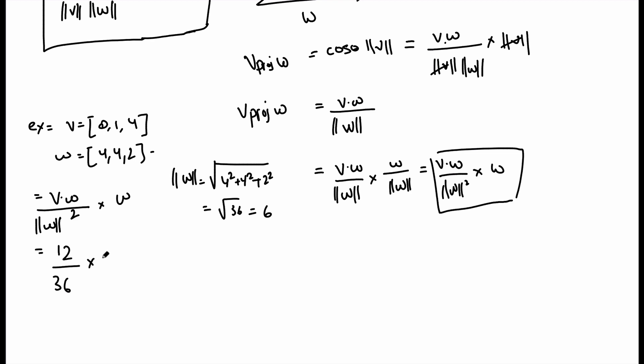Multiply that by the vector w. What we get is 12 over 36. So that's 1/3 and w. So that's (4, 4, 2). And so my vector projection is going to be, so this is our final answer: 4/3, 4/3, and then 2/3. That's the final answer. That's your vector projection. And so we are done. Thank you.